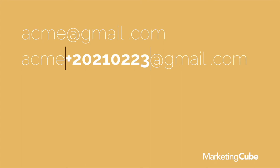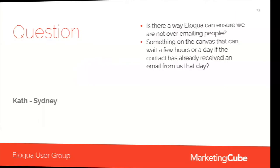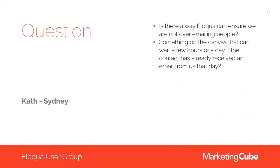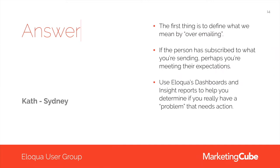Let's look at the next question. Kath in Sydney asks: is there a way Eloqua can ensure we are not over-emailing people — something on the canvas that can wait a few hours or a day if the contact has already received an email from us? My response is: first we need to define what we mean by over-emailing, because if somebody has actually asked to receive something, maybe one or two emails a day isn't undesirable — keeping in mind they've actually asked for that content.